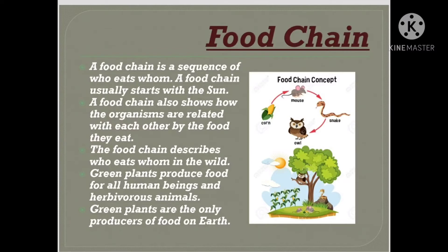Let's talk about food chain. A food chain is a sequence of who eats whom. A food chain usually starts with the sun, and also shows how organisms are related with each other by the food they eat. A simple food chain, for example, links grass to grasshoppers that are food for frogs and birds, which in turn are food for snakes and so on. Each link in this chain is food for the next link. Green plants produce food for all human beings and herbivorous animals; hence, green plants are the only producers of food on earth. All living beings including humans, animals, and other creatures are consumers of food, as they cannot produce food like green plants.